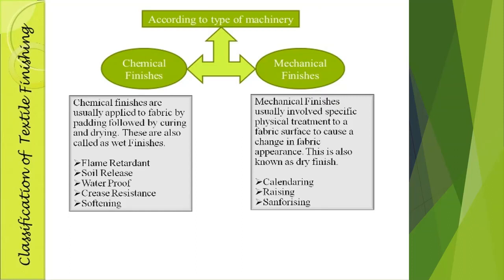Now we are going to discuss about types of finishing processes. I have given three methods of classification. The first one is according to the type of machinery or method. We classify finishing into two types: one is chemical finishing and another one is mechanical finishing. The name itself explains what is meant by chemical finishing — if the process is carried out using chemicals, those finishes come under the category of chemical finishes.